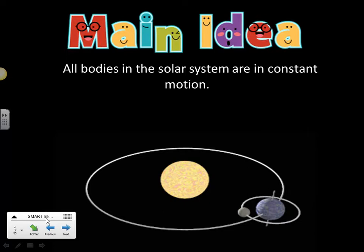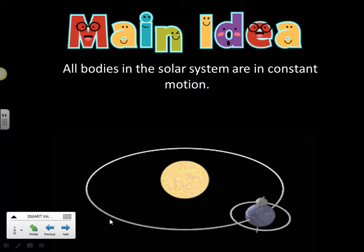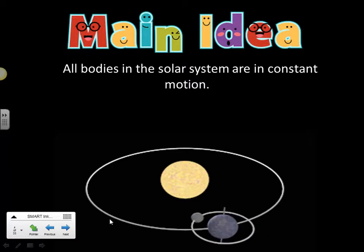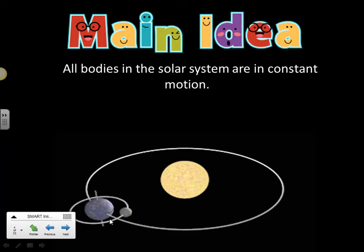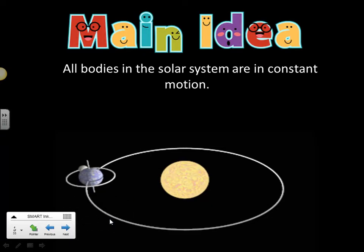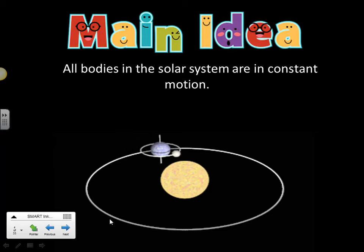The main idea is that objects in the solar system are in constant motion, including the Earth. The reason why the moon appears to have phases from Earth is because it is revolving around the Earth, and its position as it orbits changes the amount of light that we see reflecting off the moon.